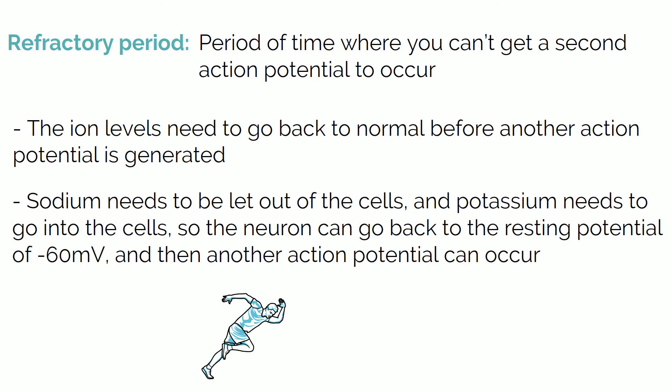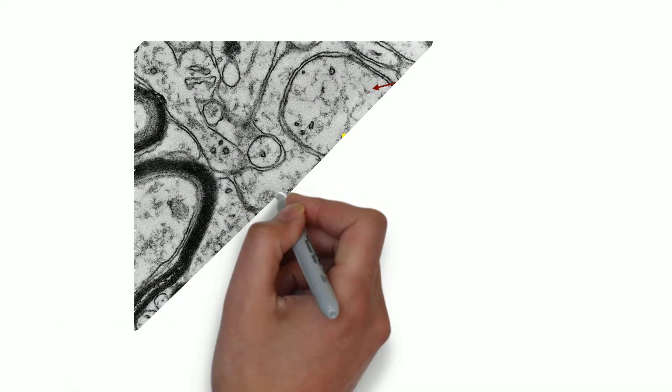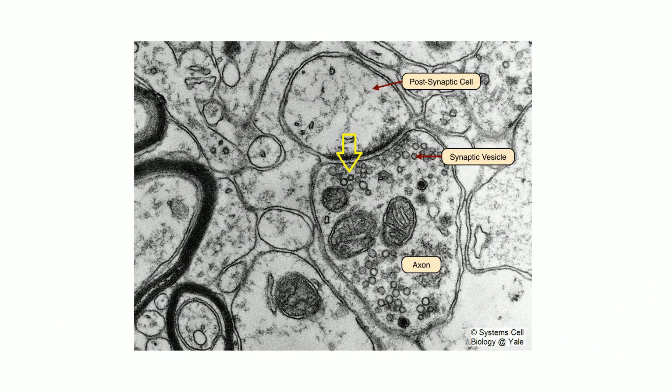Let's see what a synapse looks like under an electron microscope. It looks a bit confusing, but if you look closely you can see the vesicles that carry neurotransmitters pointed out by the yellow arrow. These will be releasing the neurotransmitters into the next nerve cell called the post-synaptic cell.